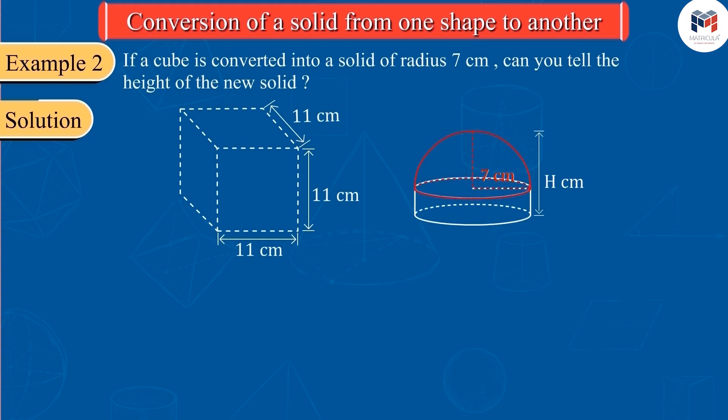For a hemisphere, its radius will be its height. So, what should be the height of the cylinder? Since the total height of the solid is H and the height of the hemispherical part is 7 cm, therefore, the height of the cylindrical part will be H minus 7.